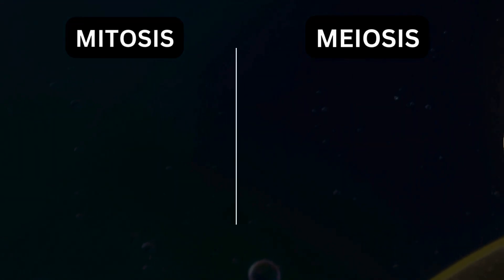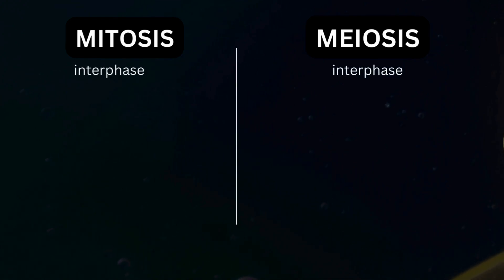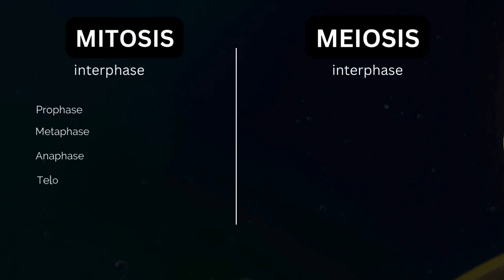Both mitosis and meiosis include the same phases: prophase, metaphase, anaphase, and telophase, except in meiosis they happen twice, so they are usually referred to as one and two.